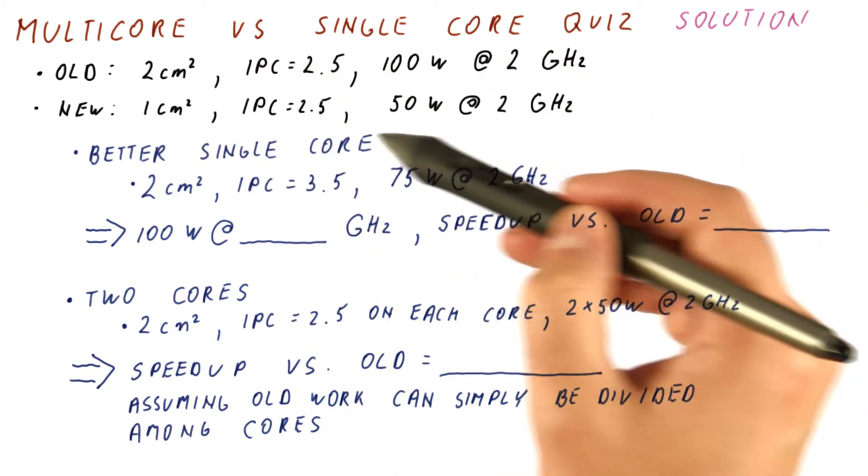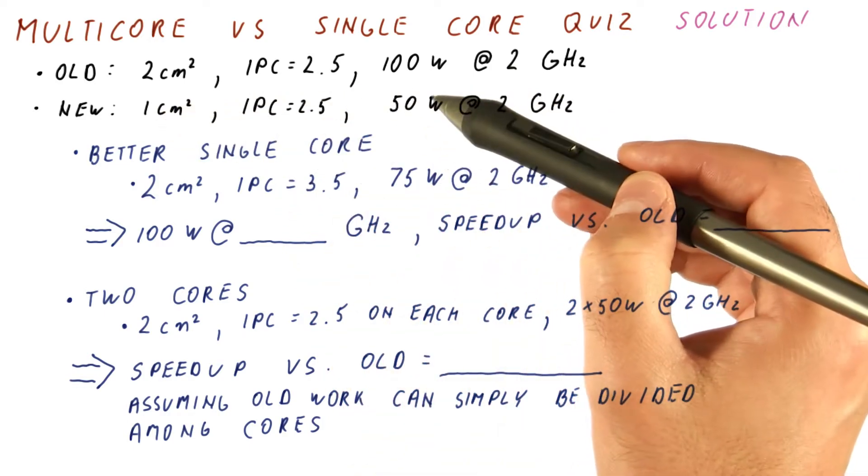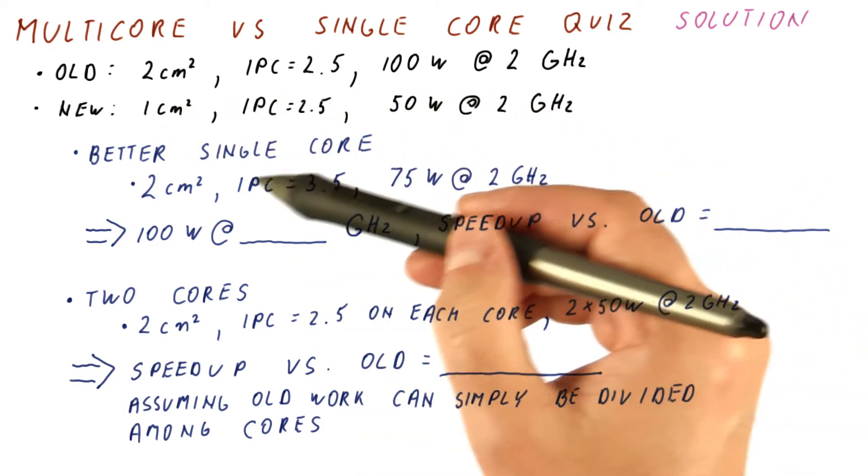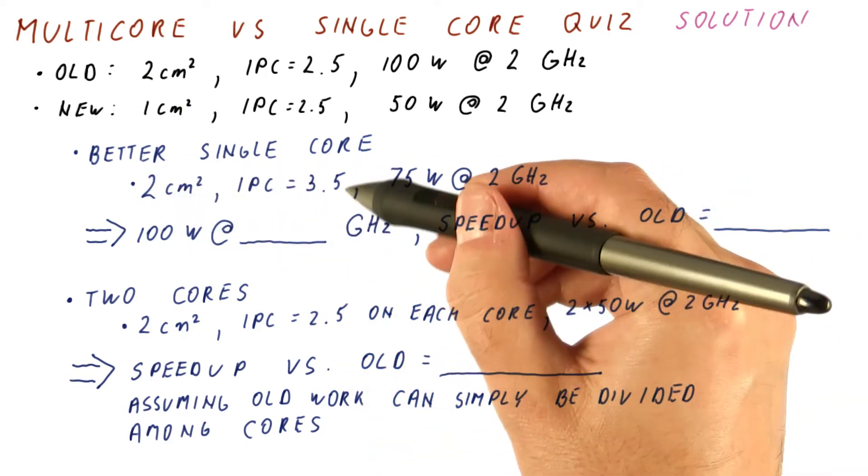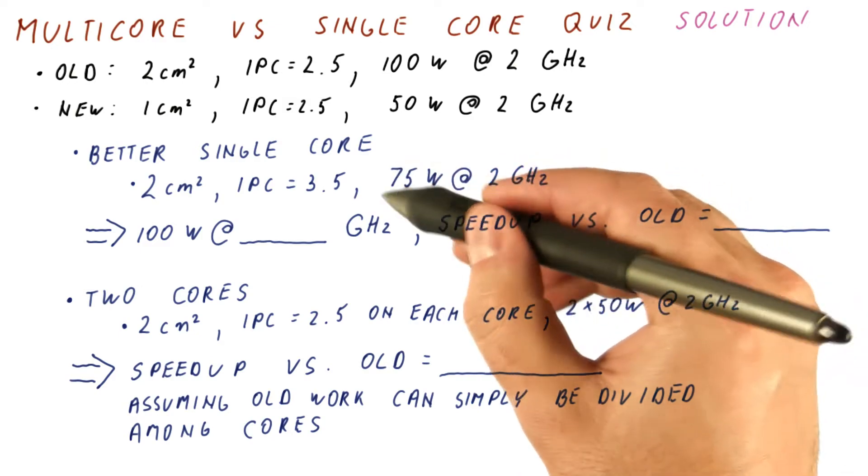one of these cores is going to be half the size and half the power. So we have the option of either replacing that with a better core that occupies the whole area, gets us more IPC, but consumes slightly more power.